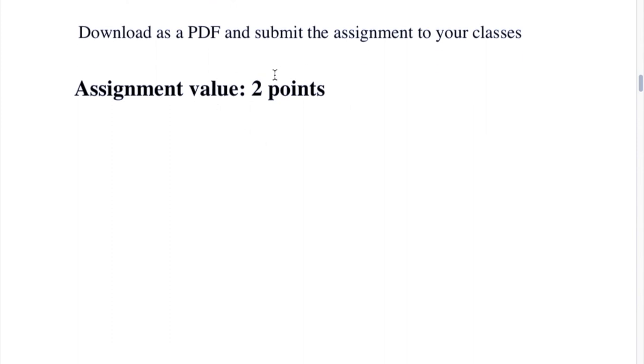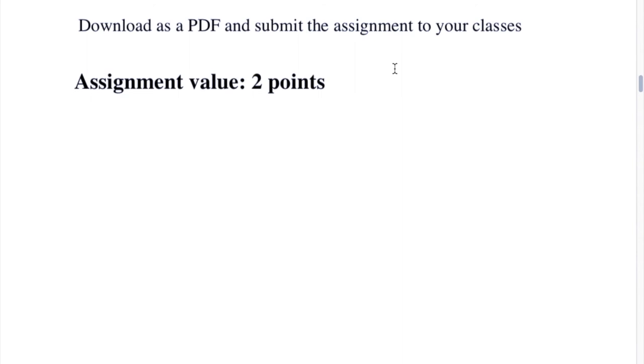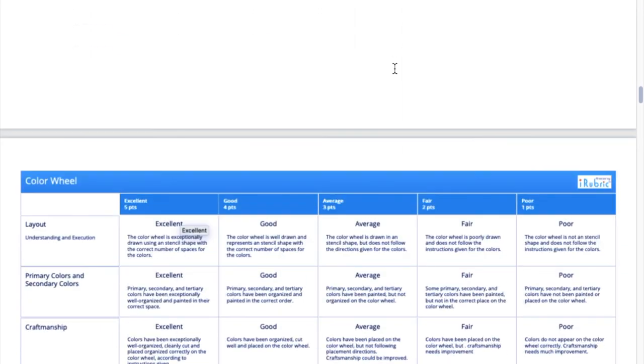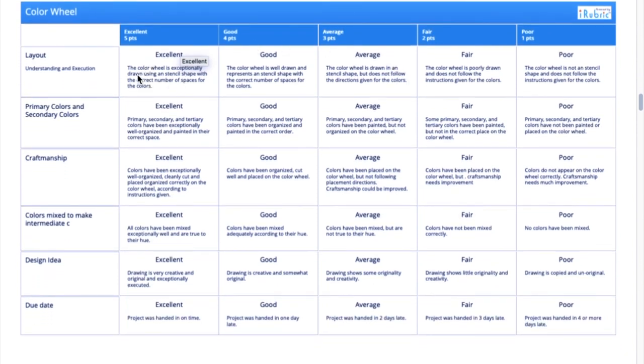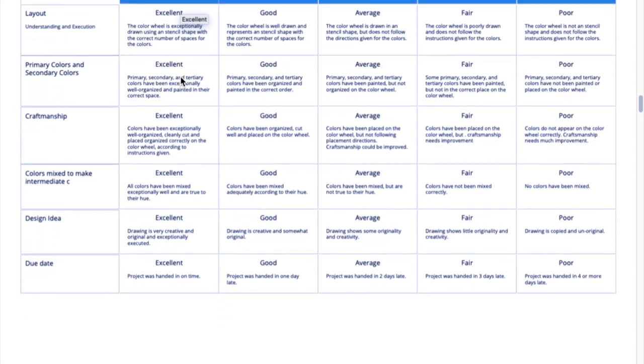Download your PDF. Once you have put it up into slides, Google slides, export that as a PDF and send it to me. You have a rubric here. Look at this. You want excellent. The color wheel is exceptionally drawn. You do a nice job on that.